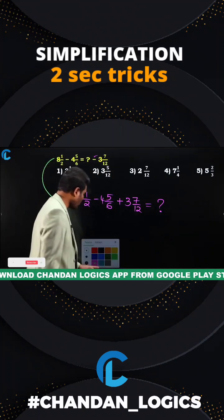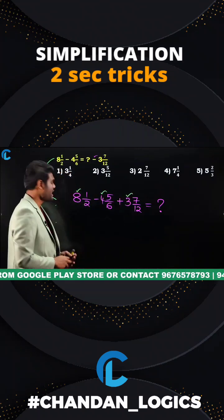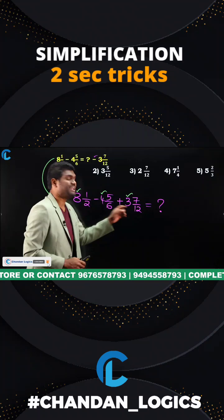Now I need to find what is the question mark value. Rather than simplifying and wasting your time, calculate integer value separately, fraction value separately. Now 8 minus 4 is how much? 8 minus 4 is 4. 4 plus 3 is how much? 7.